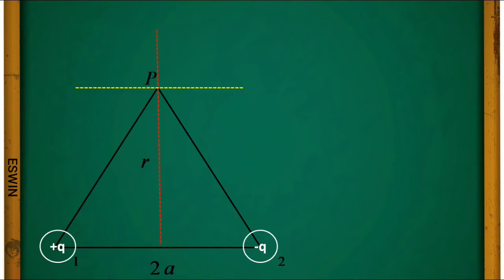Whenever we are asked to find out a force or electric field at a point, we will keep a unit positive charge called the test charge at that point and find the net force or electric field acting there. Let the distance between charge +q and point P be √(r² + a²).